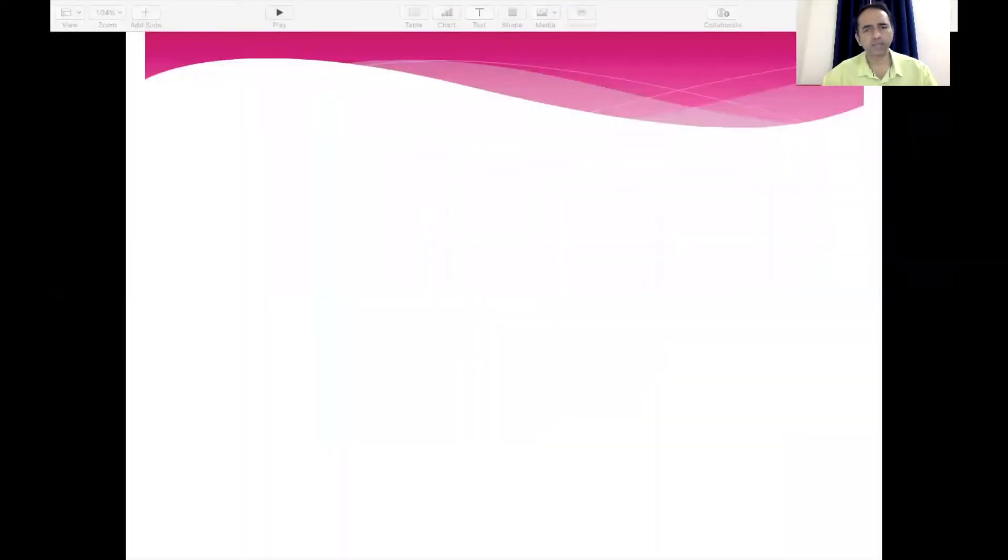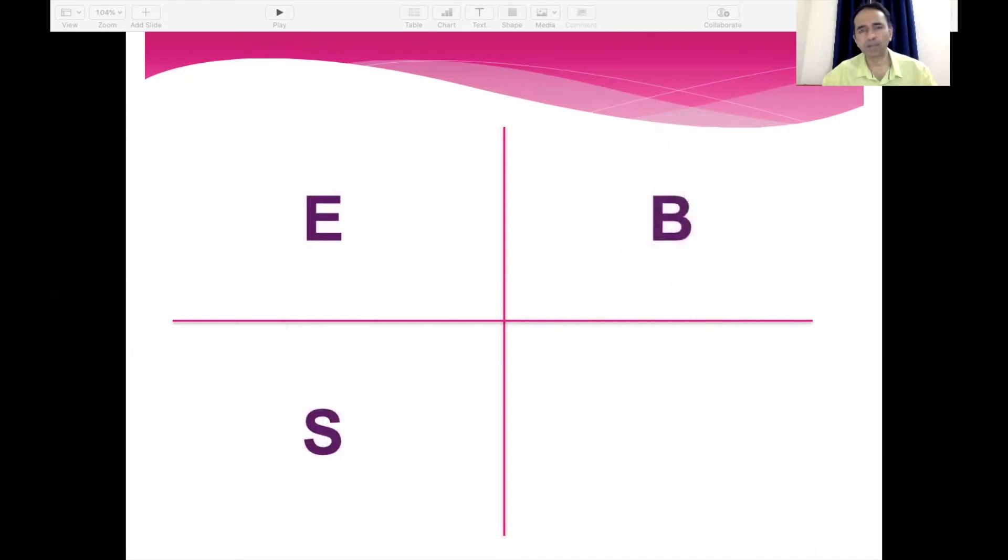Let's see what exactly are these quadrants. It's pretty simple. It's four quadrants. It starts from the top left. The first one is the letter E or Employee. The second one is S, which is down, and that is Self-Employed. The third is B, which is Business, and the fourth is I, which is Investment.